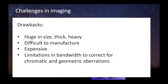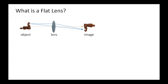But what are the problems? Most of the optics tend to be pretty huge, thick, and heavy. It's difficult to manufacture because lenses need to be polished, and that contributes a lot to the expense of the lenses, especially for very precise optical instruments. There are limitations in bandwidth — you have to correct for chromatic aberrations and geometric aberrations and so on. This is one of the solutions that we have demonstrated to the field of free-space imaging: the concept of a flat lens.